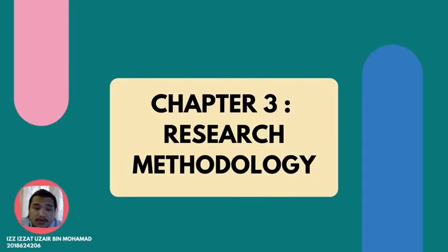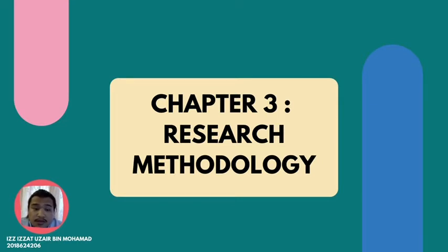Thank you for the explanation on Chapter 2. I would like to continue the presentation on Chapter 3 — Research Methodology. Research Methodology is a specific procedure or technique used to identify, select, process, and analyze information about a topic. In a research paper, the methodology section allows readers to critically evaluate the study's overall validity and reliability. Research Methodology is specifically about how a researcher systematically designs a study to ensure valid and reliable results and address the research aims and objectives — for example, deciding what data to collect, who to collect it from, how to collect it, and how to analyze it.